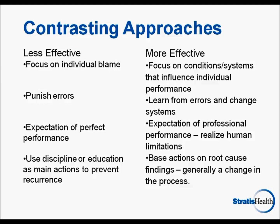This slide contrasts approaches to addressing problems. Successful RCA uses the approaches that are listed as being more effective. Instead of a focus on individual blame, a more effective approach is to focus on conditions or systems that influence individual performance. Instead of punishing errors, it is more effective to learn from errors and change systems. Instead of expecting perfect performance, it is more effective to expect professional performance and realize there are human limitations. And instead of using discipline or education as the main actions to prevent recurrence, it is more effective to base actions on root cause findings — generally a change in the process.